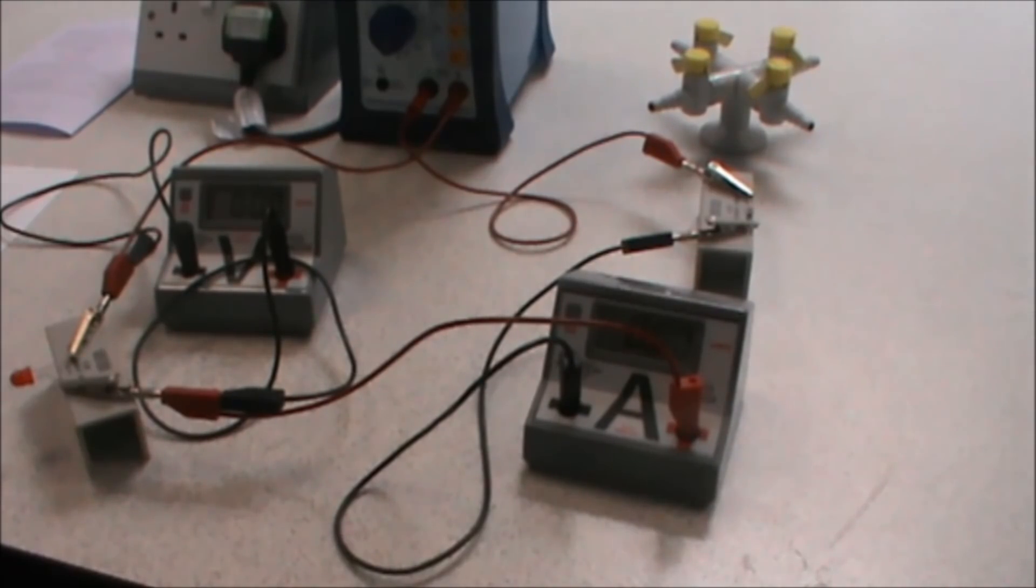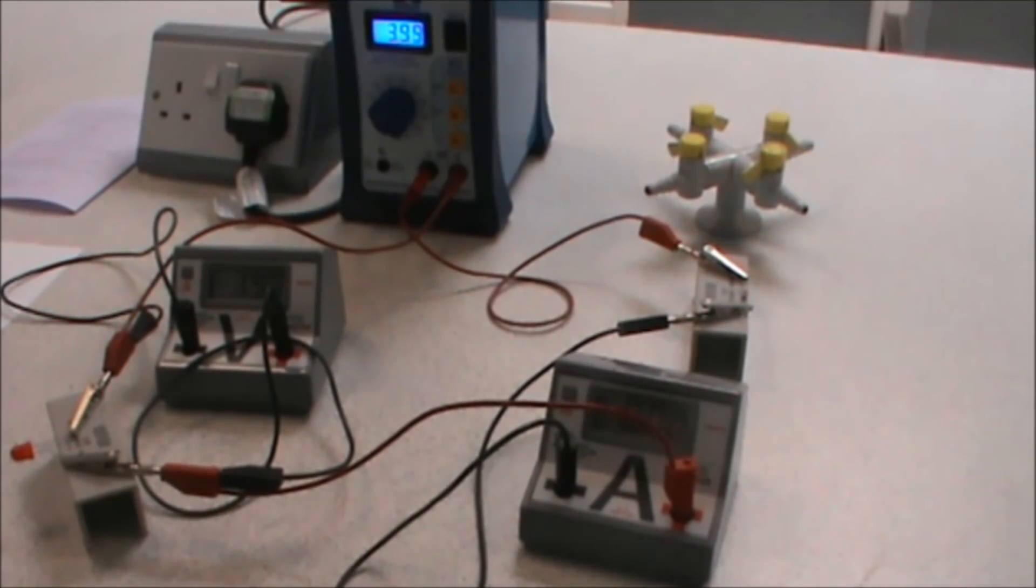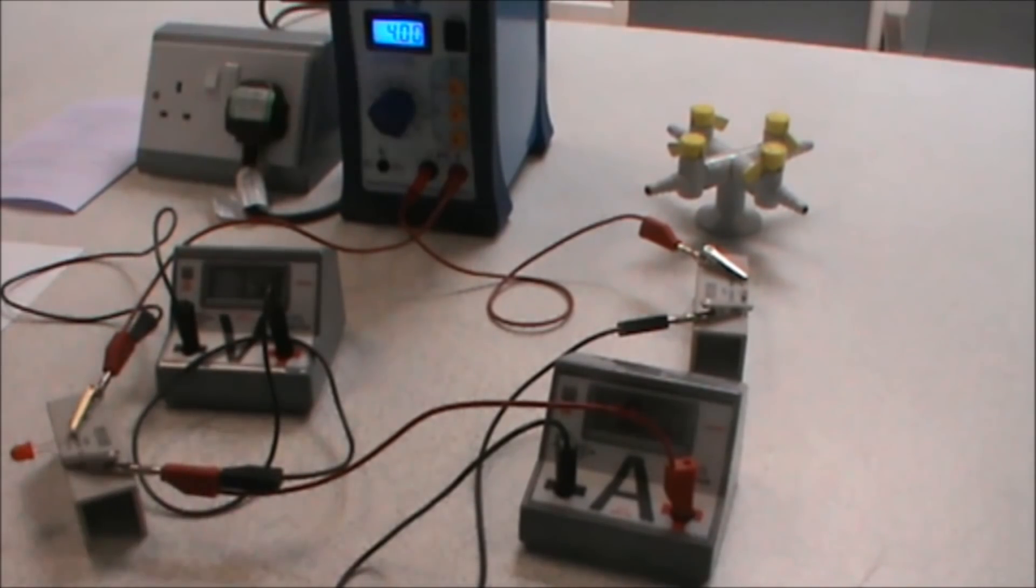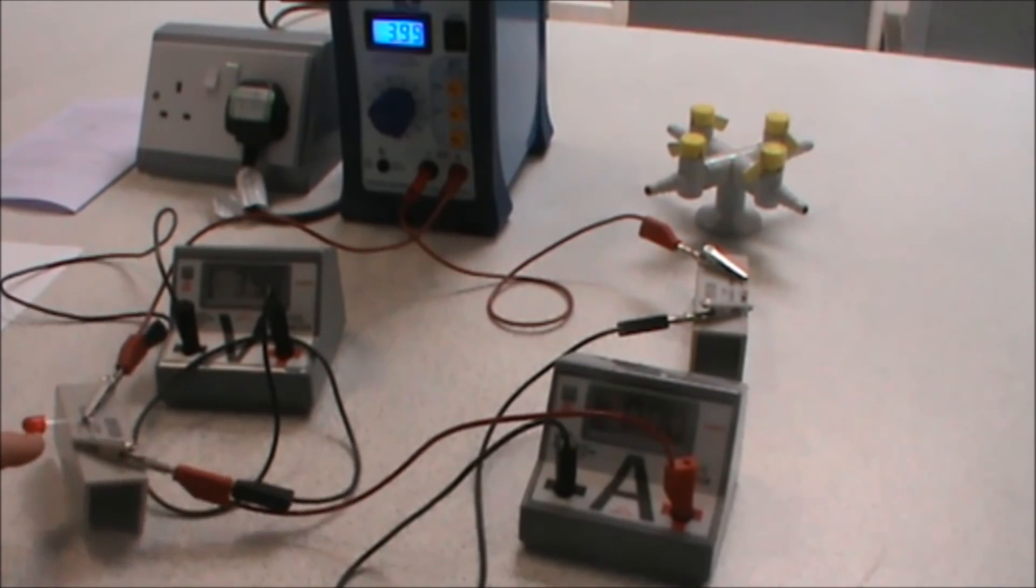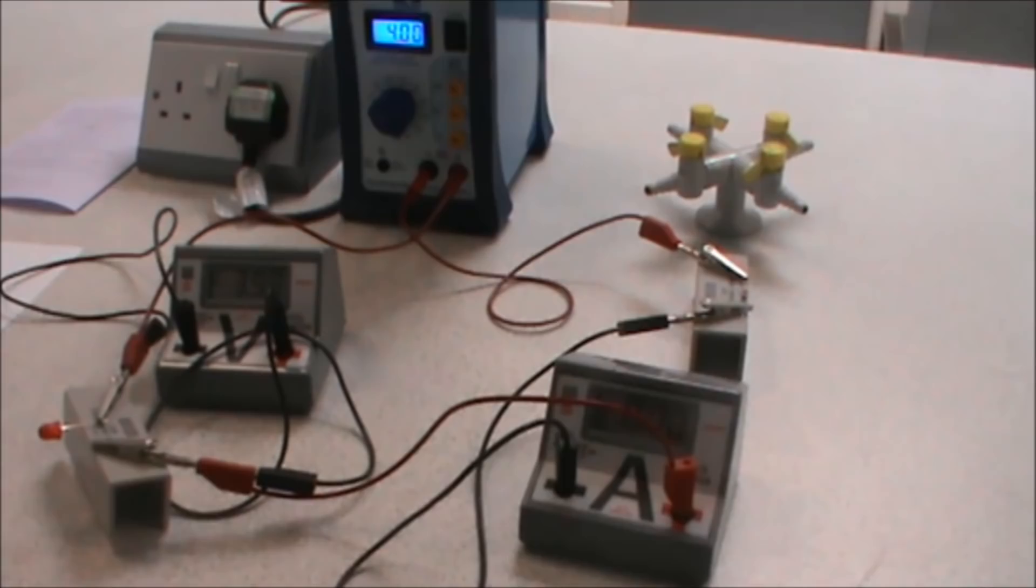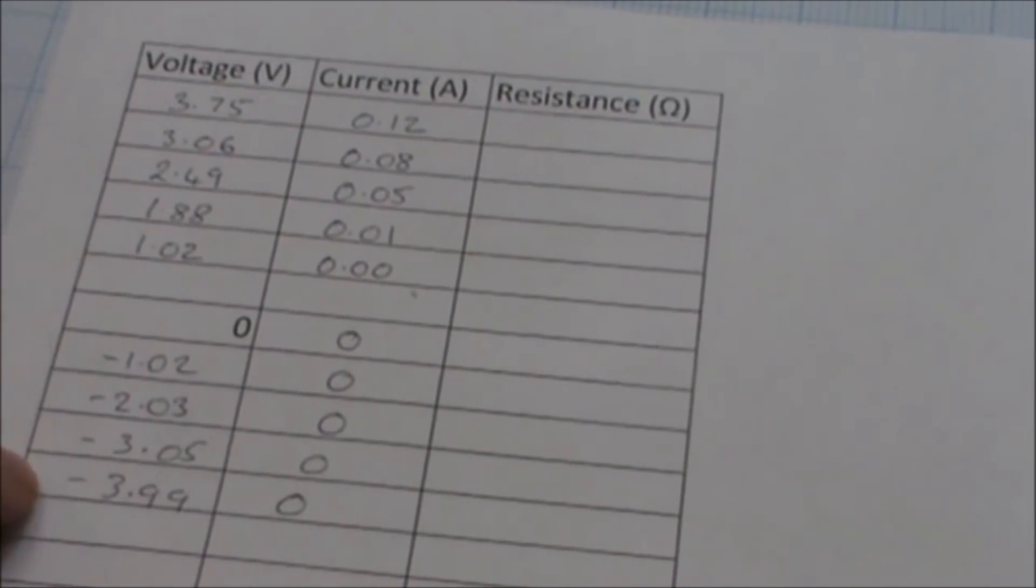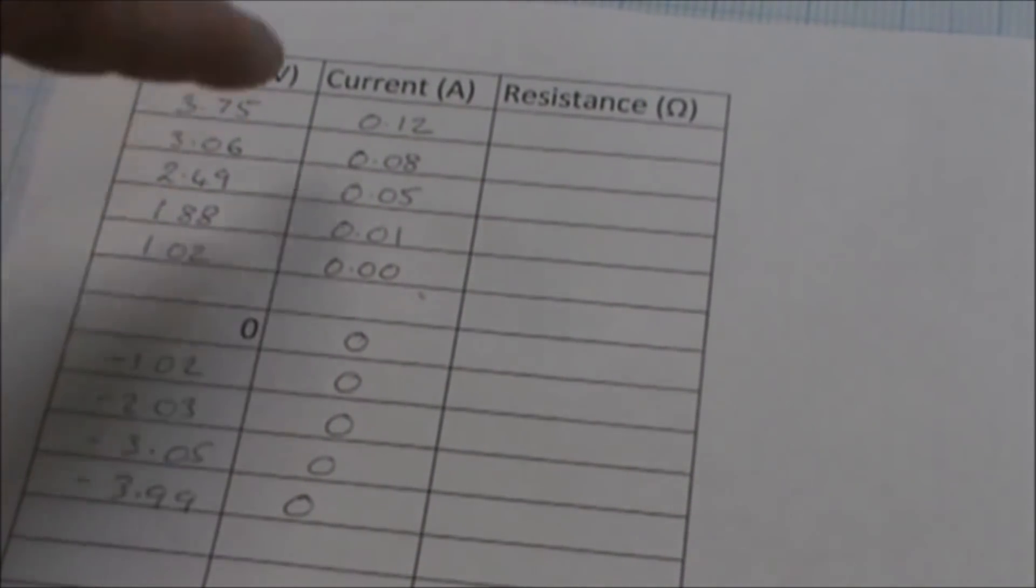Now if we look carefully at our power supply, we can see we're getting 3.99 volts, but we've got absolutely nothing happening on our LED. This doesn't mean it's broken, this means it's working in the correct way, and we shall see that when we plot our graph. So there are our full set of results from plus 3.75 down to minus 3.99, and we can see the current changes.